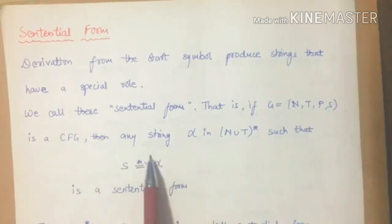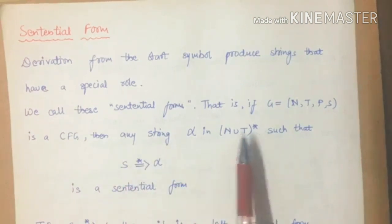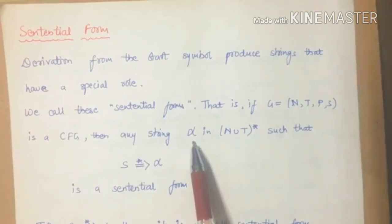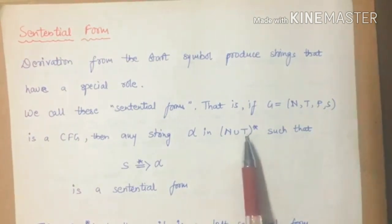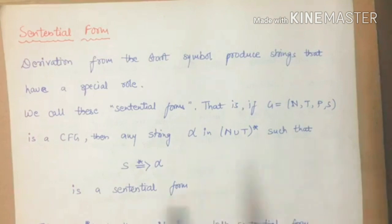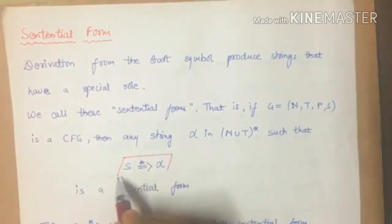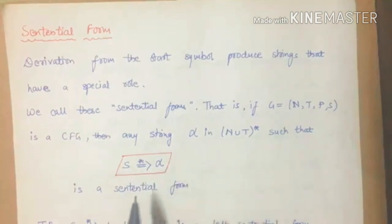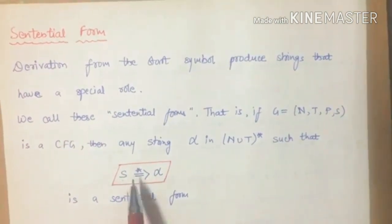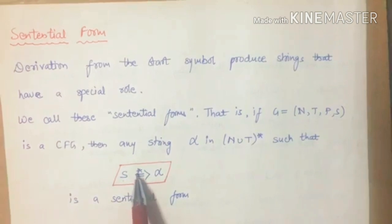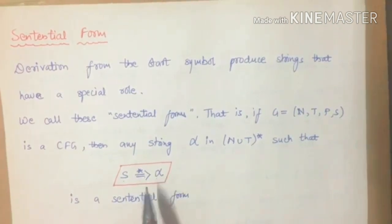Then, any string alpha in N union T star. That means any string is alpha. What can alpha be? It can be non-terminal or terminal. This represents sentential form. It means that we start from S and apply 0 or more steps, and what do we derive? Alpha.